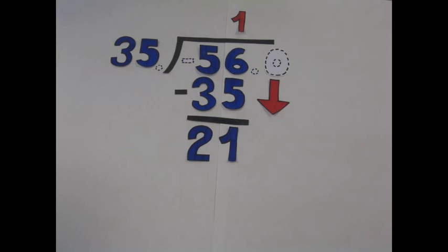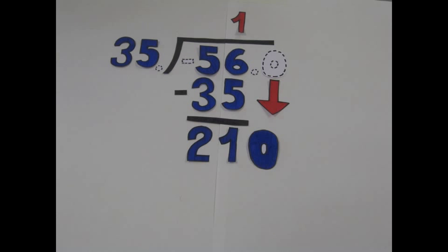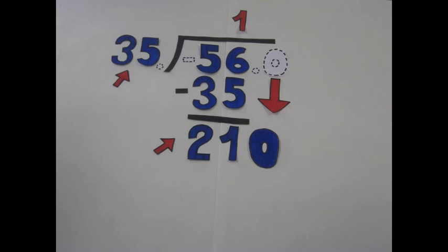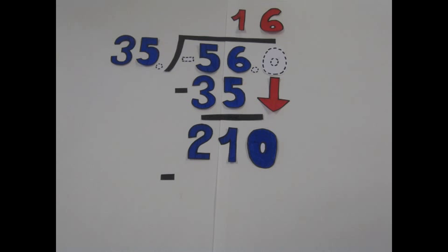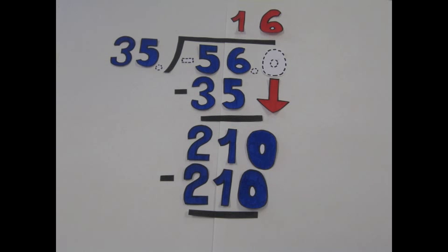Since there are no more numbers to bring down, you need to bring down a 0. 21 becomes 210. Next, you divide 210 by 35. The answer is 6. You put the number 6 above the 0. 6 multiplied by 35 is 210. 210 subtract 210 is 0.